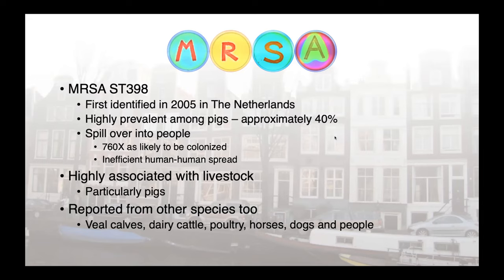Fortunately, this is a strain that didn't spread terribly efficiently between people. So a person would acquire this strain from a pig, perhaps develop an infection themselves, but it didn't tend to spread beyond that one individual. MRSA ST398 is highly associated with livestock and, while particularly identified in pigs, it's also been found in veal calves, dairy cattle, poultry, horses, dogs, people — really anywhere that it's subsequently been looked for.